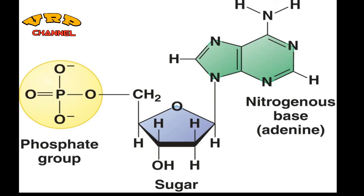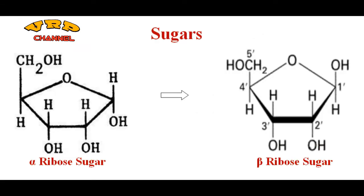Now it is relevant to understand the chemistry of a nucleotide molecule. Each nucleotide, as shown in the figure, has a central sugar unit in blue, a nitrogen base in green, and a phosphate group in yellow. These are bonded together to form a complete nucleotide. Let's have a look at the chemistry of the nucleotides — first of all, the sugars.